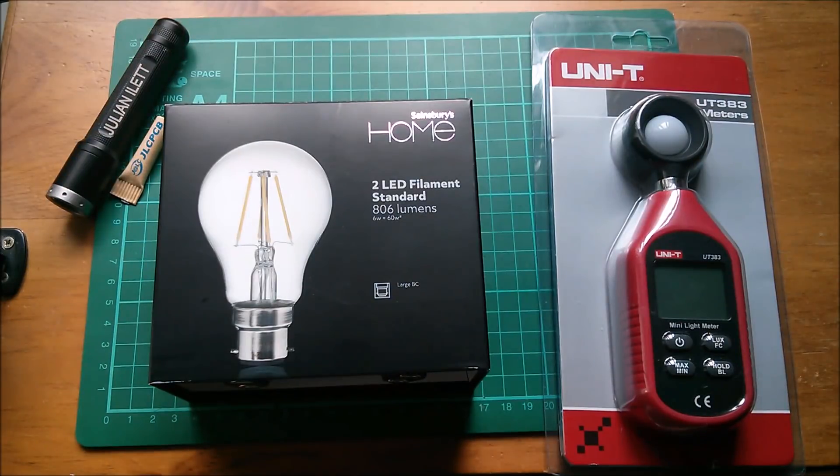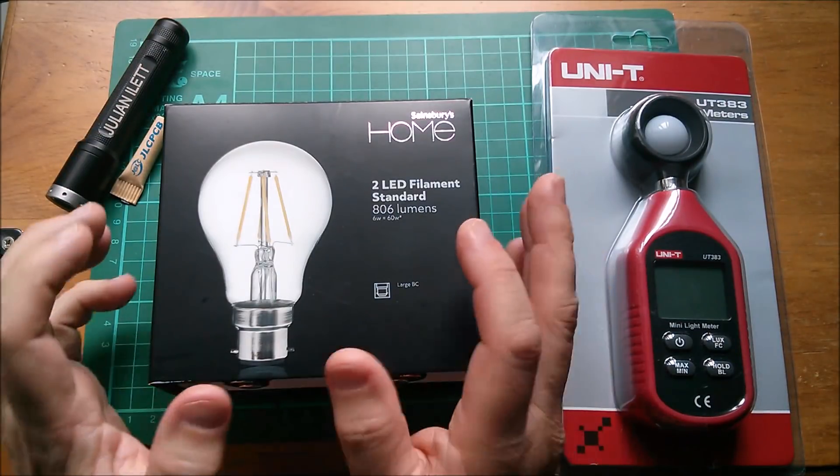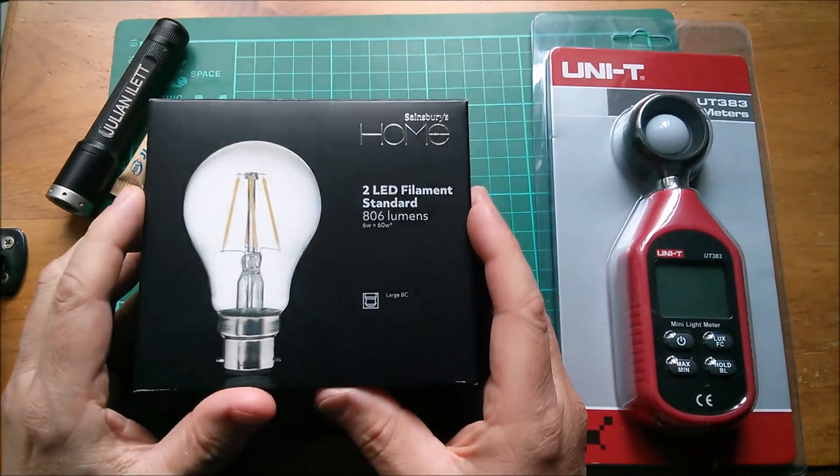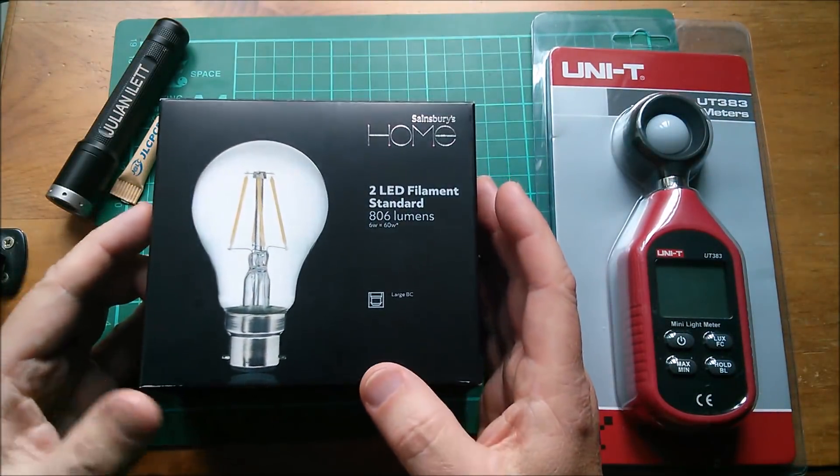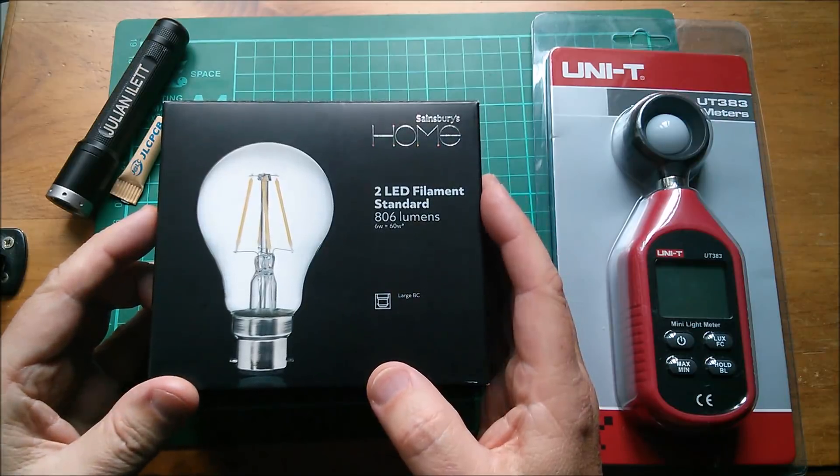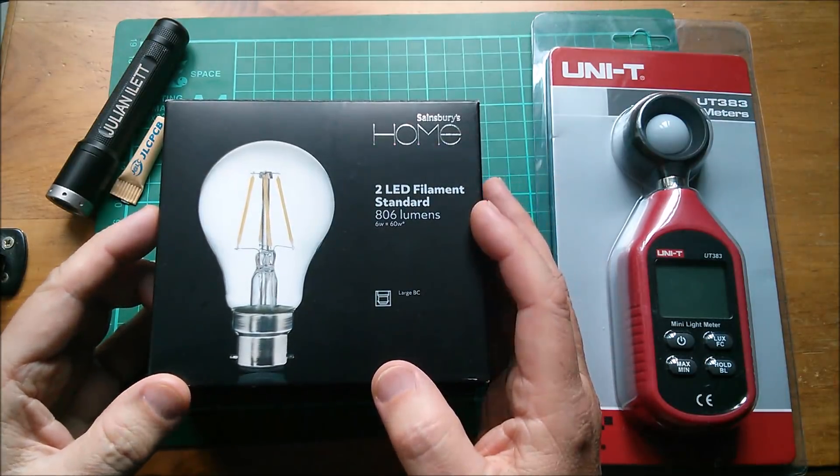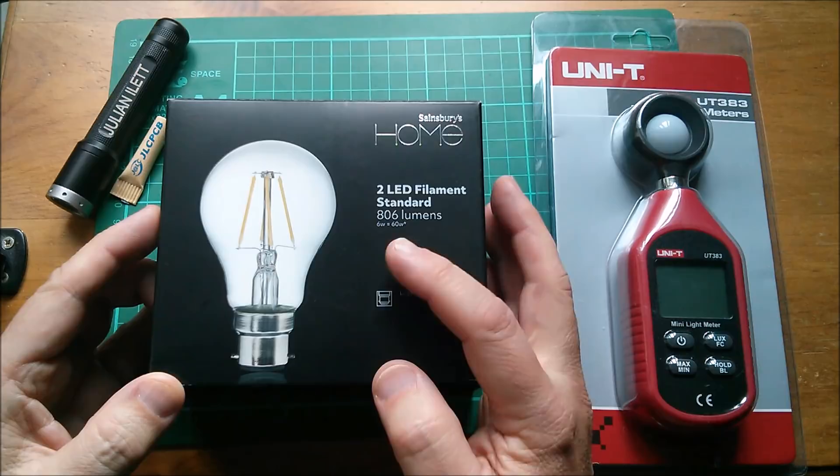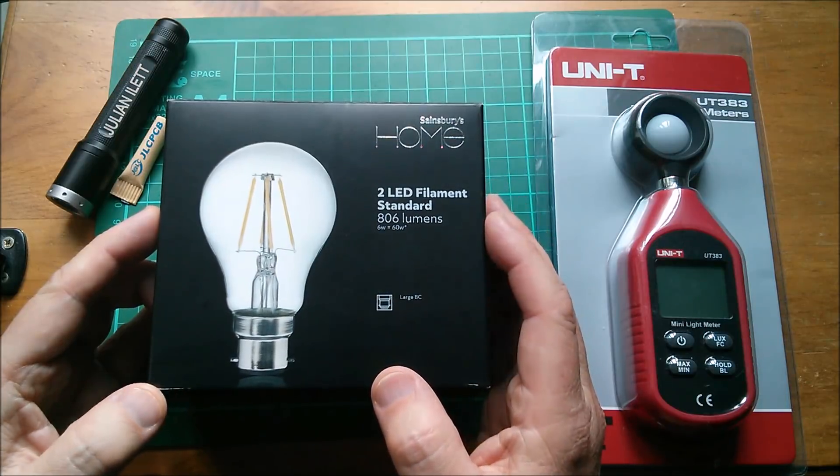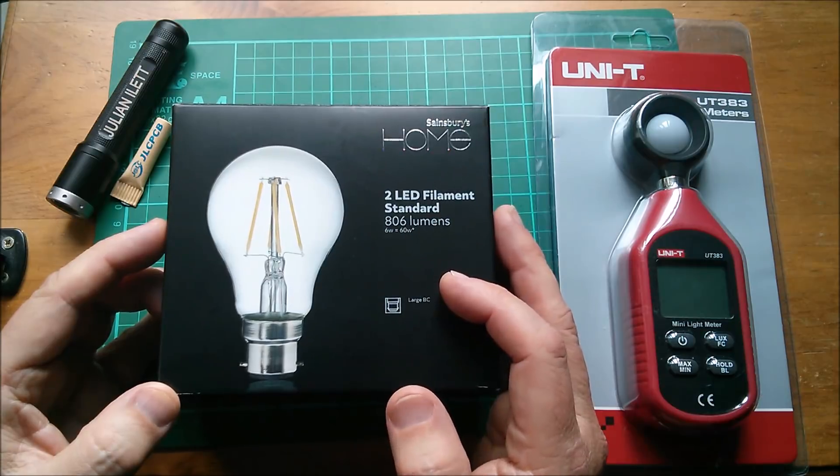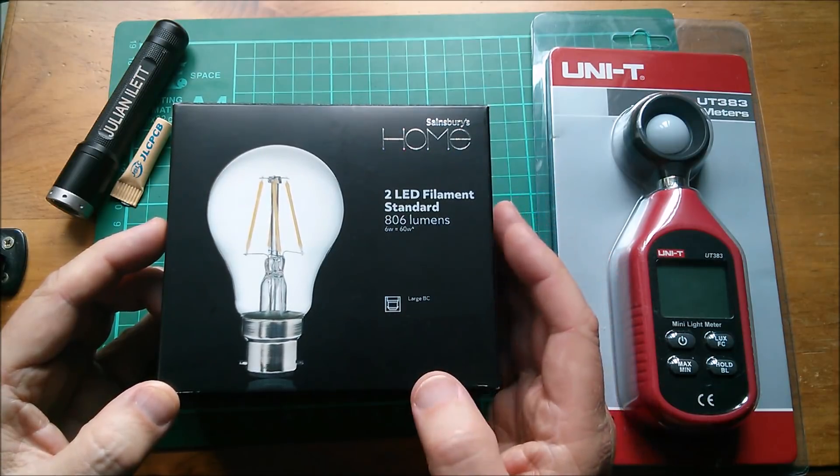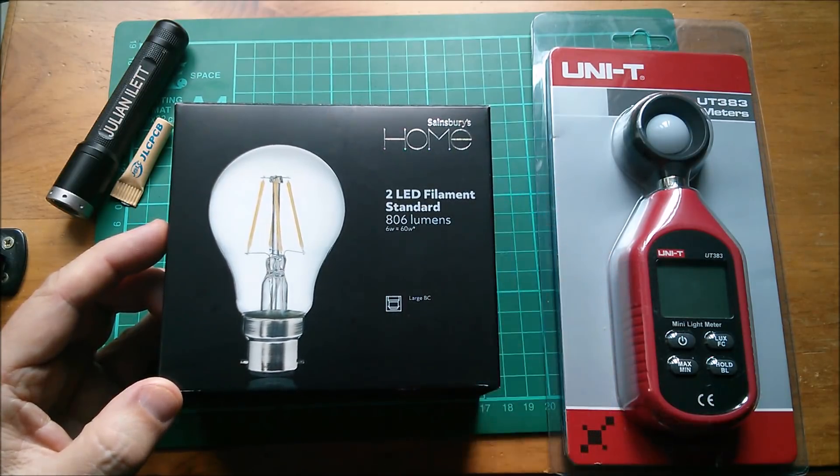Good afternoon all. On my desk I have two new items. This box of two Sainsbury's LED filament light bulbs. I bought this for £8, so that's £4 each. They are 806 lumens and then you get this strange thing that says 6 watts equals 60 watts. Yeah we know what that means. It'll draw 6 watts of energy. It's the equivalent of 60 watts incandescent.